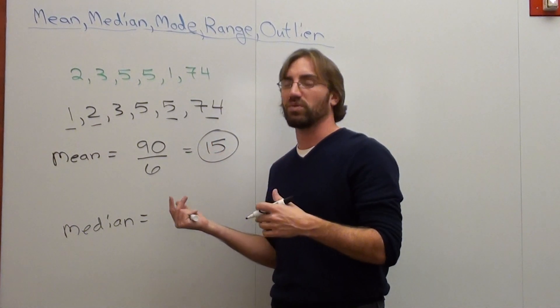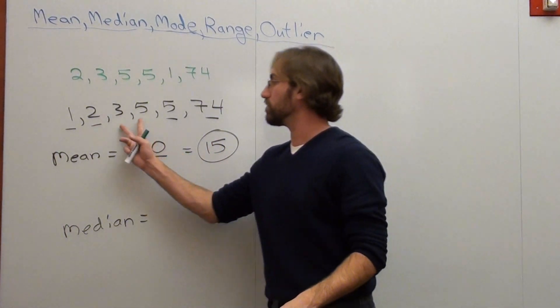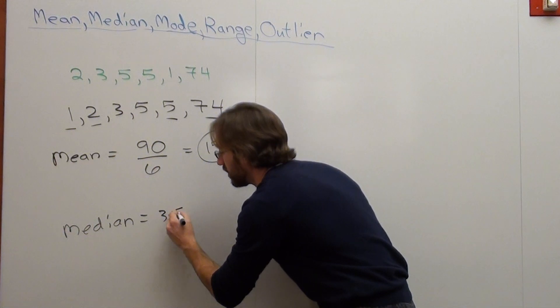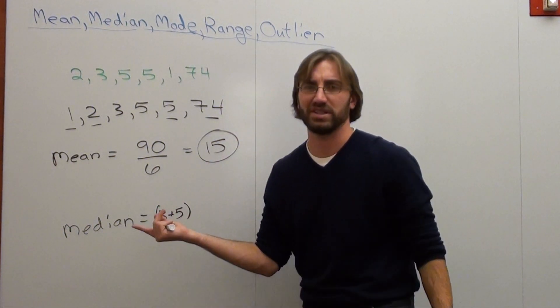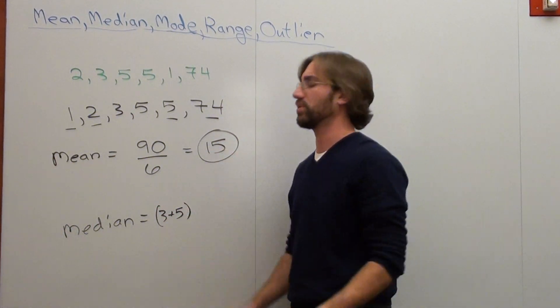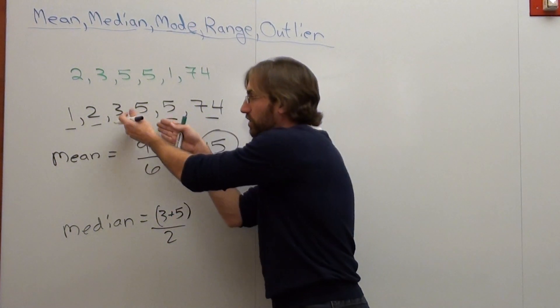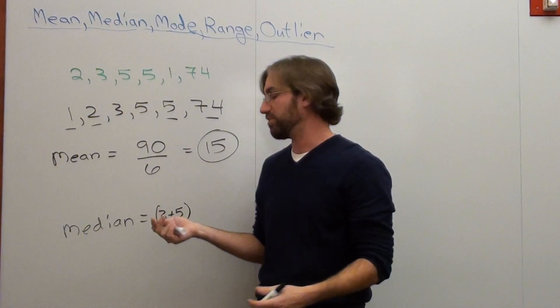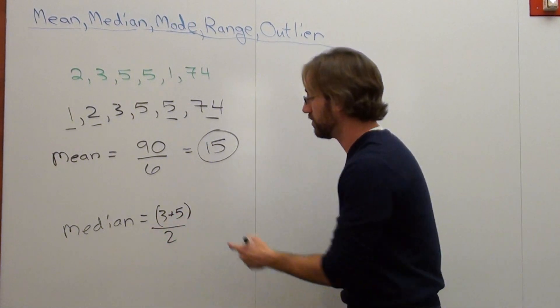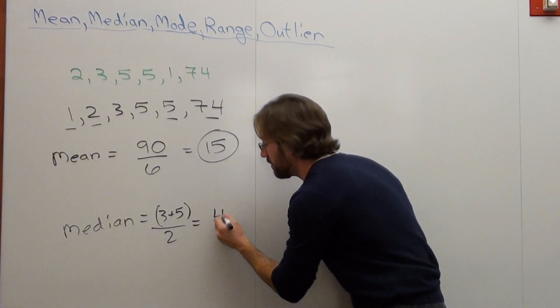But if there's more than one number left, if there's two numbers left, what you do is you add them up, 3 plus 5. If you're going to do this in a calculator, you make sure you put parentheses in it, because you're going to get it wrong if you don't put it in parentheses. And you divide by 2. Now, if 5 was the only number left after doing that, then the answer would be 5. But since there's two numbers, I add them up and divide by 2. That's 8 over 2. So your median is 4.